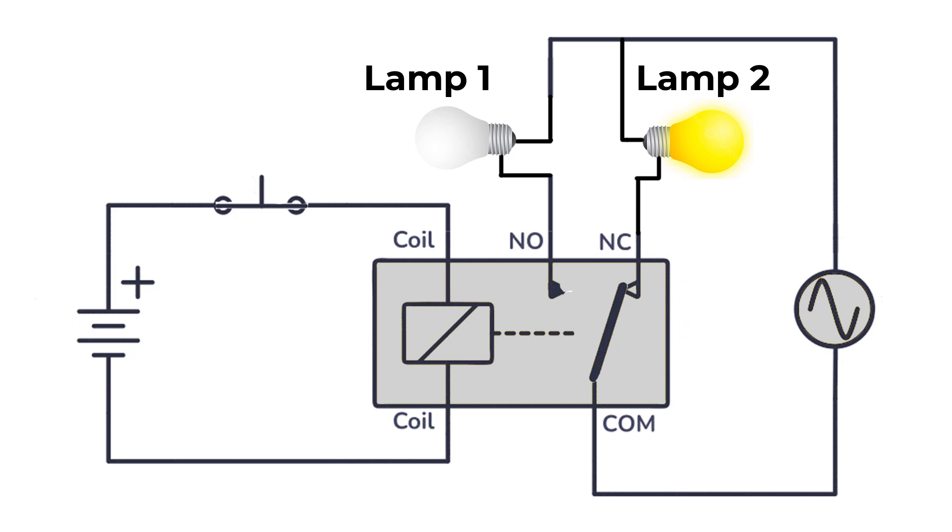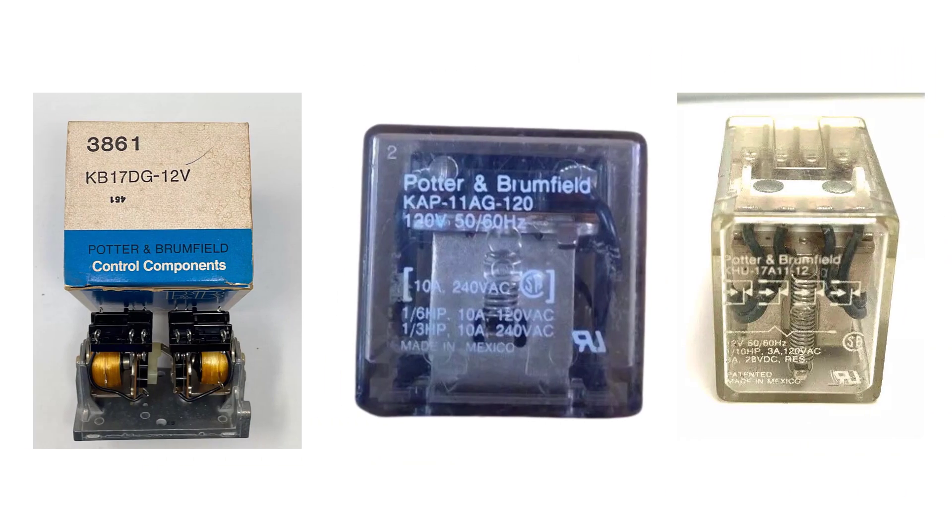De-energize A1 and A2 again and we will return back to lamp number one is on and lamp number two is off. You should read the operating rated voltage of coil A1 and A2.